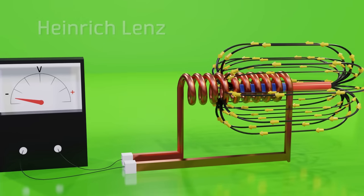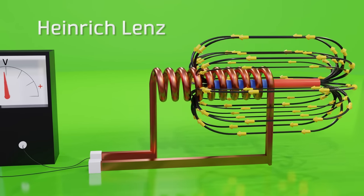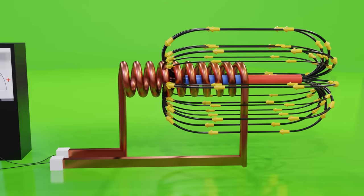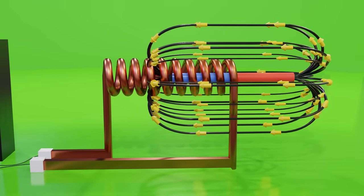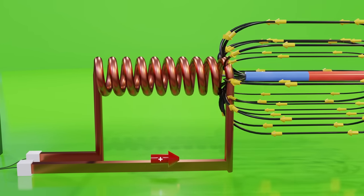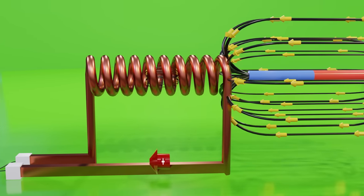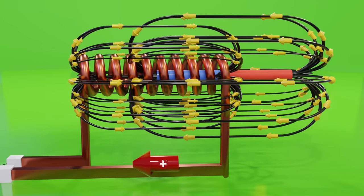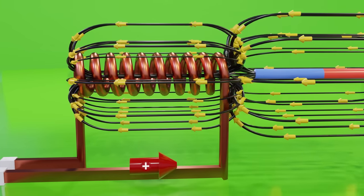And thirdly, we have Heinrich Lenz's law, which tells us that when we generate an electric current by means of a magnetic field, as in the case of generators, the direction of this induced current is such that it generates a magnetic field that opposes the magnetic field that generated it in the first place.